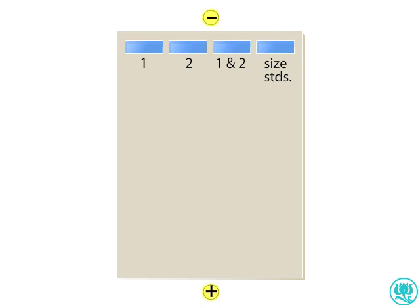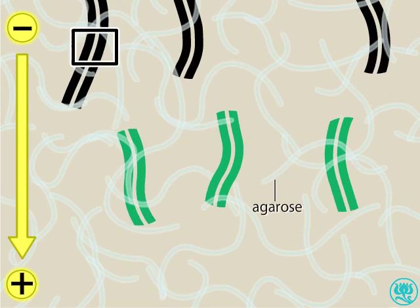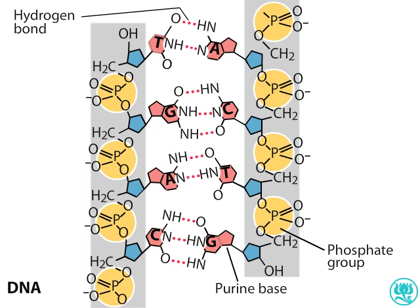The blue tracking dye is negatively charged and migrates toward the positive electrode, as does the DNA. The DNA backbones contain negatively charged phosphate groups, which are attracted to the positive electrode.